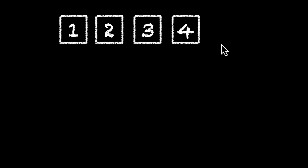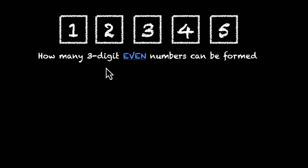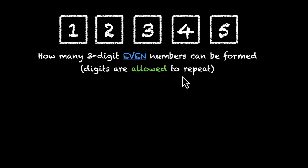Let's bring back our 5 digits 1, 2, 3, 4, 5 and let's again make some 3-digit numbers. But this time we'll be specific — we're going to make 3-digit even numbers. So the question is: how many 3-digit even numbers can be formed? And let's say we allow the digits to repeat; you can pick a digit as many times as you want.